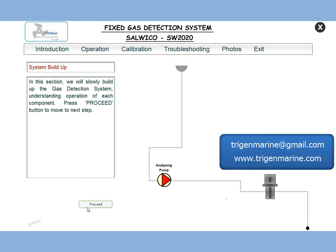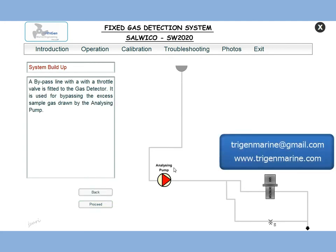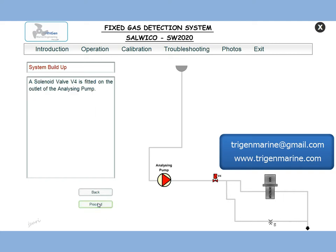Let us now slowly build up our components. Since the pump is a positive displacement type, it is going to push a certain amount of gas. The detector needs to take only a very little bit, so we need a throttle valve to pass all the excess air. There also has to be a solenoid valve on the path — when we do not need to use the system, this can close and protect our gas detector.